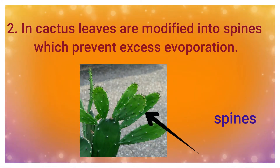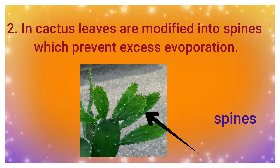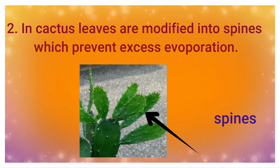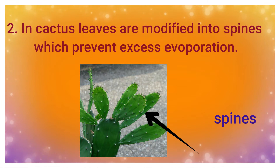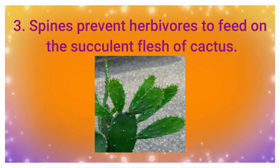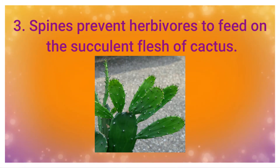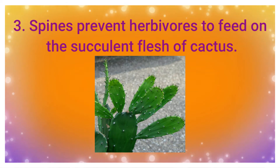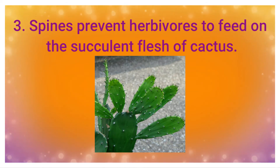In cactus, leaves are modified into spines, which prevent excess evaporation. Spines also prevent herbivores from feeding on the succulent flesh of the cactus.